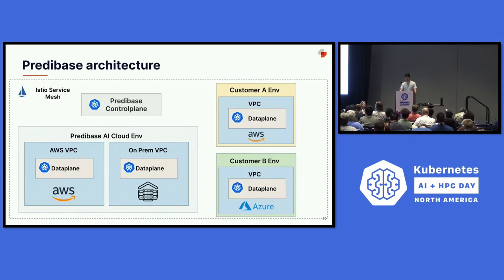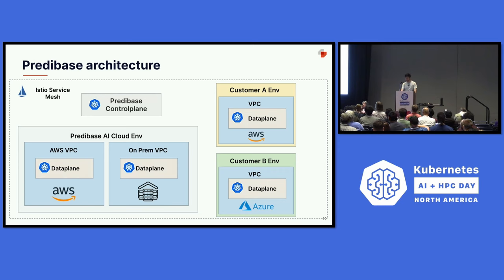Here's a high-level view of the Predibase architecture. It consists of multiple Kubernetes clusters all registered into the same Istio service mesh. Each data plane for a customer, if they choose to deploy like this, lives in their VPC and their cloud account. All of these cloud accounts also have blob storage provisioned — that's where model artifacts go — and that has allowed us to alleviate some of the concerns with data governance.